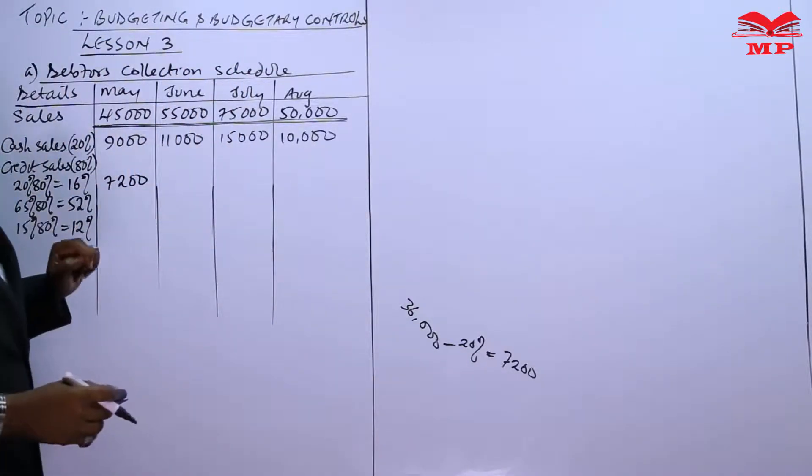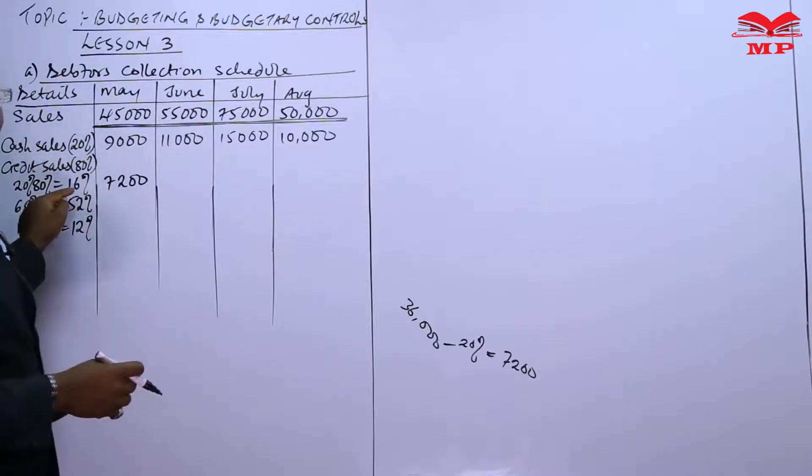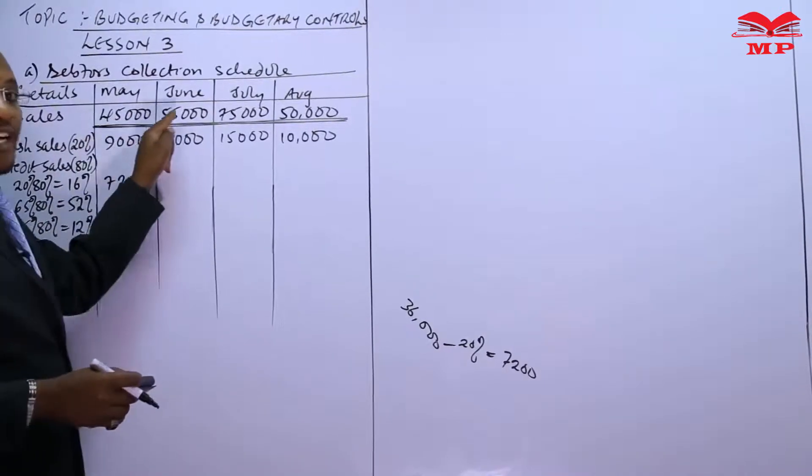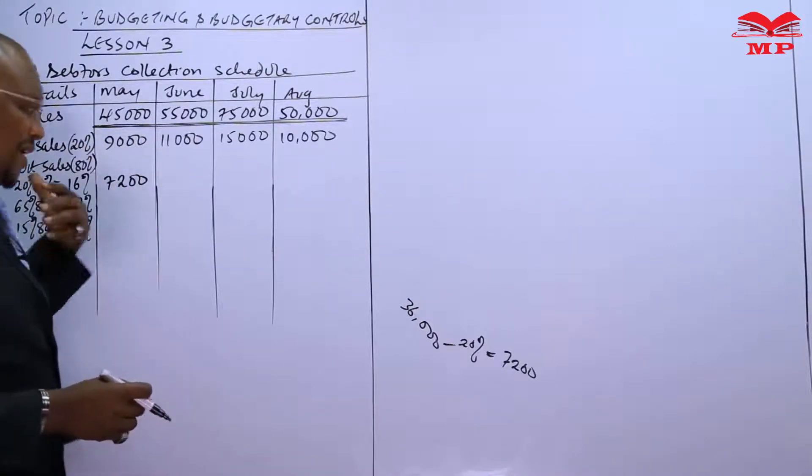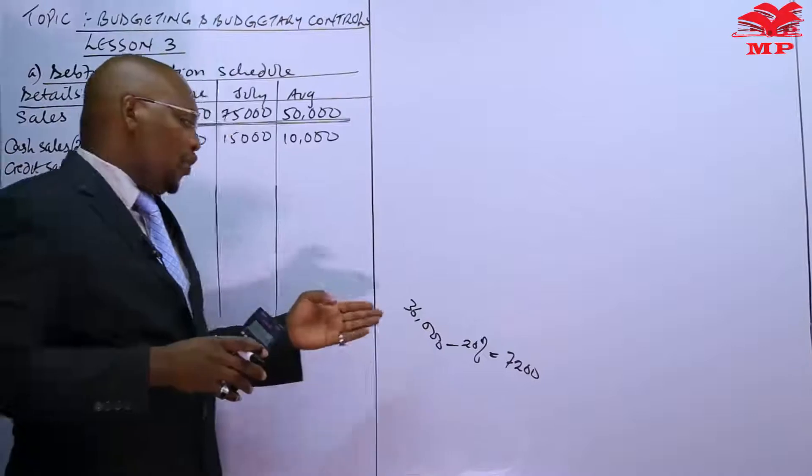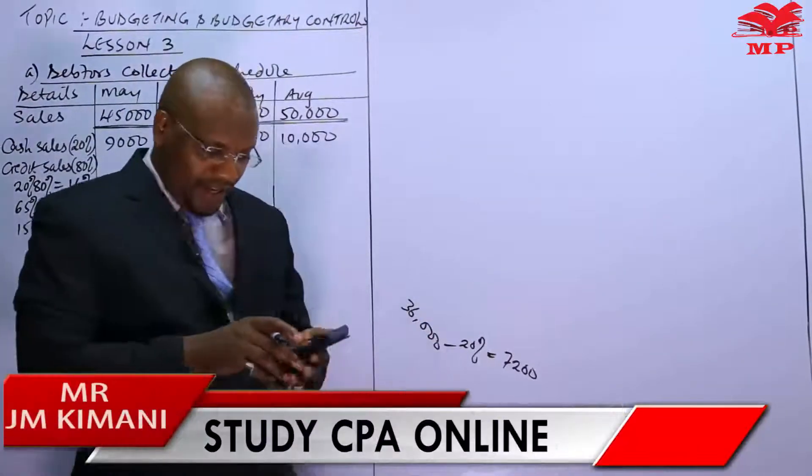Now I'll be directing my 16% on the same total figures just like I did with the cash sales. I find it easier that way, but still you can work out on the credit sales.